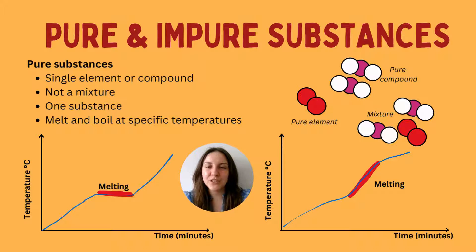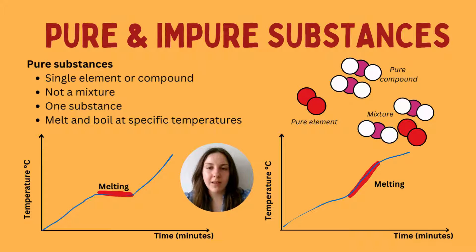Let's get started and talk about pure and impure substances. A pure substance in chemistry means a substance that is only made of one type of thing — a single element or a compound — and it is therefore not a mixture. A pure substance will have a sharp melting point, but a mixture will melt over a range of temperatures because the different components each have their own individual melting or boiling point.